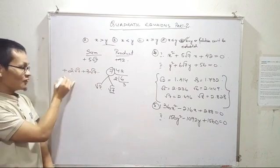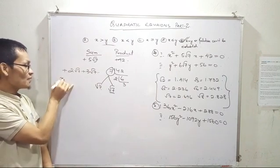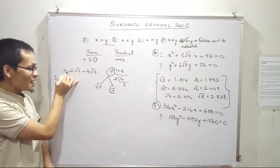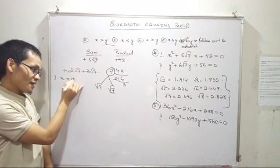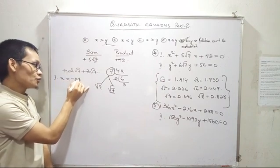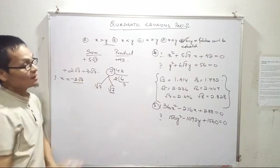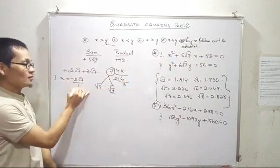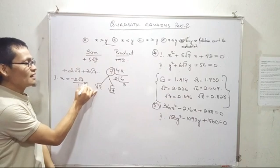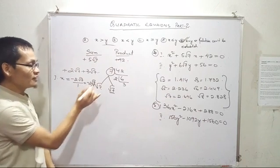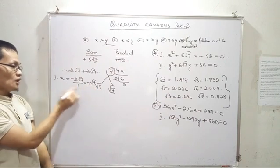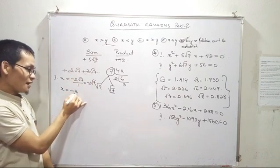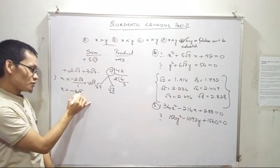So you can find out the value of x. The x values are plus and minus 2 root 7, divided by the coefficient (power 1). So you get minus 2 root 7. Then x equals plus or minus 3 root 7.